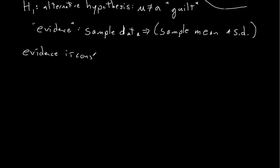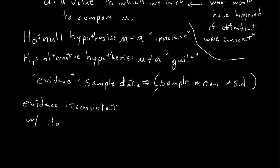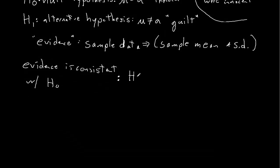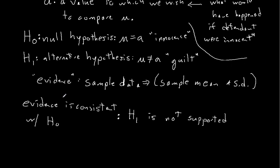If the evidence is consistent with the null hypothesis — so the sample data is consistent with the idea that the average among the population is equal to A — then we say that the alternative hypothesis H sub 1 (also sometimes called H sub A) is not supported. That's sensical: if the evidence is consistent with the null hypothesis, we're not going to support the alternative hypothesis. Since the null hypothesis is the idea of innocence, we're going to look at the defendant as innocent unless proven guilty. We're going to look at this mean as being equal to A unless we have convincing reason to think that it's not equal to A.